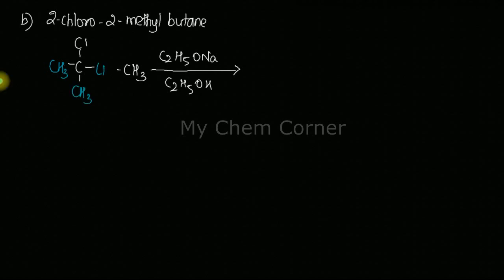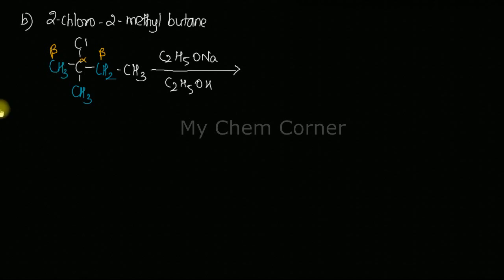Drawing the structure: CH₃–C(CH₃)(Cl)–CH₂–CH₃. Now identifying the beta carbons: the halogen is bonded to the alpha carbon. Attached to the alpha carbon are three other carbons, which are the beta carbons. Two of the beta carbons are the same CH₃ groups — so I consider only one — giving me effectively two distinct beta carbons to evaluate.